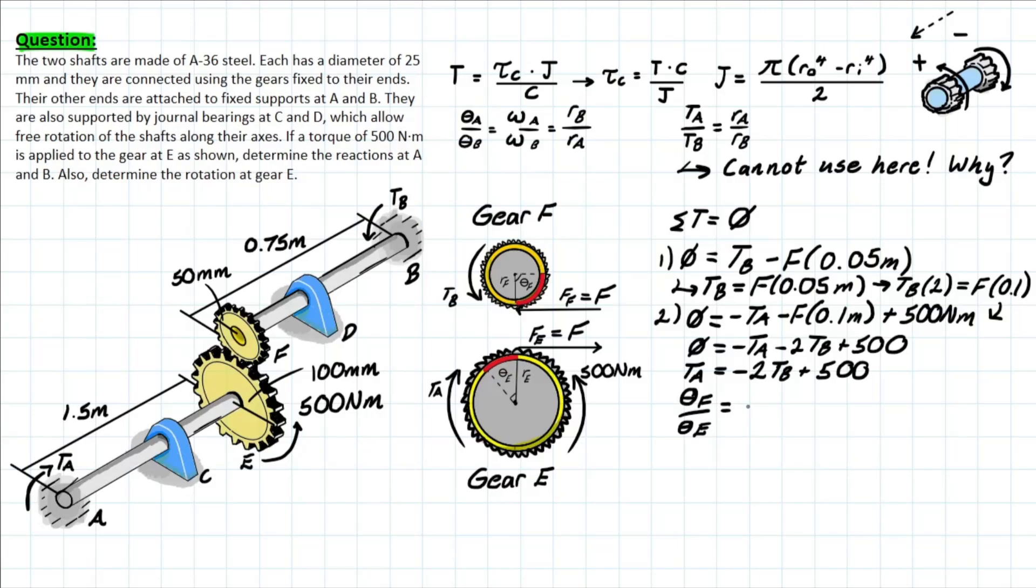This is going to be equal to the ratio of the radius at E over the radius of F. And we know that that's simply going to be radius of E, which is 0.1 meters, over F, which is 0.05 meters. And then solving for that, we have θF = 2θE based on this relationship.